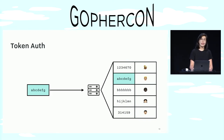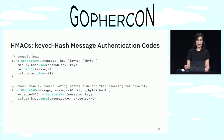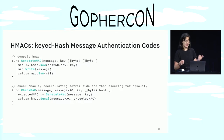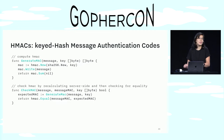HMACs are a way to authenticate your message using a hash. An HMAC takes a key and a message as input and outputs their hash. And this is pretty much how you do that using the Go standard library.